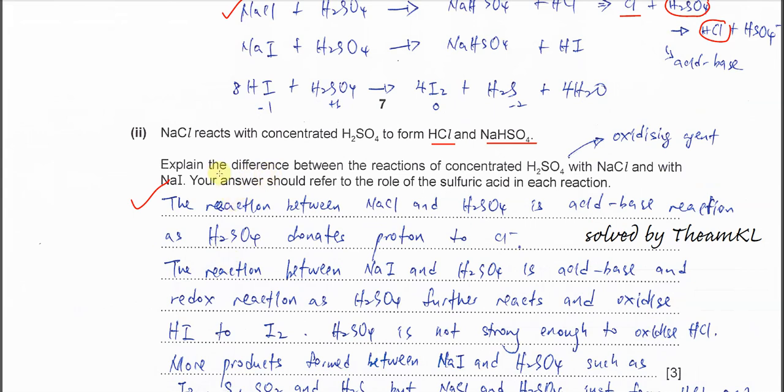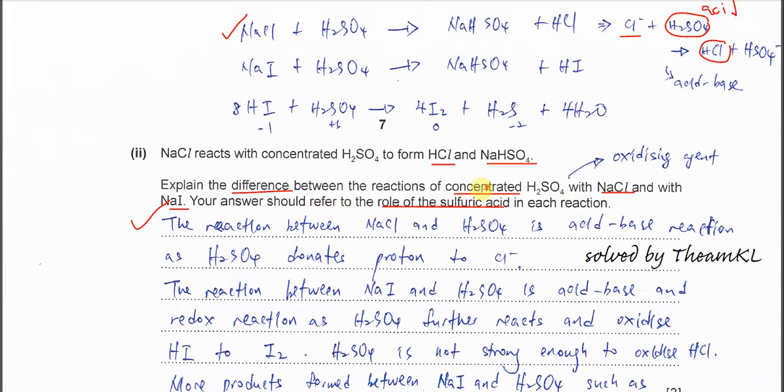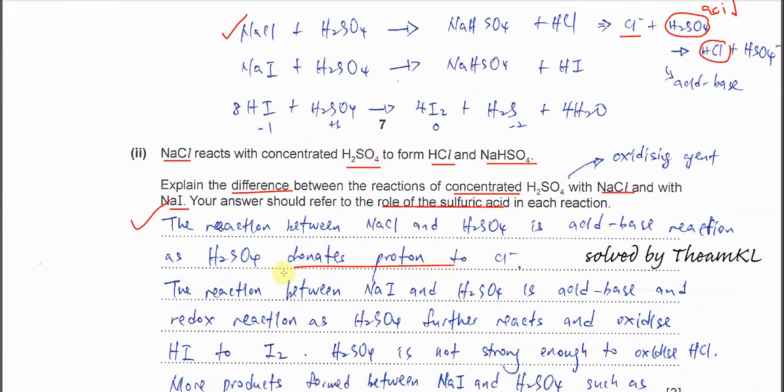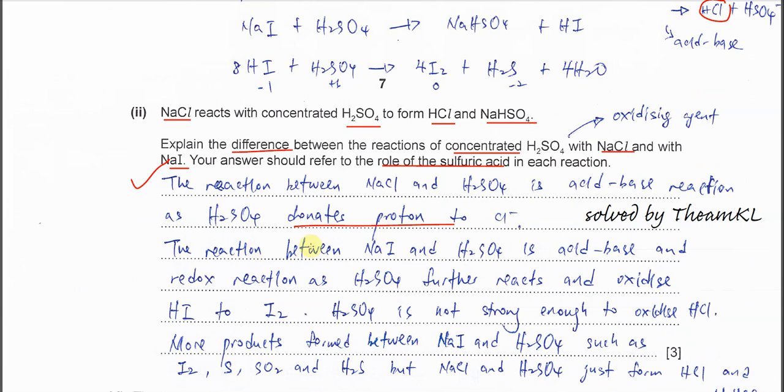And you have to explain the difference between the reactions of the concentrated H2SO4 with NaCl and NaI. Your answer should refer to the role of sulfuric acid. I already told you just now. For the sodium chloride with H2SO4, the role of H2SO4 is the acid. So it donates proton. H2SO4 is an acid which donates proton to the chloride.